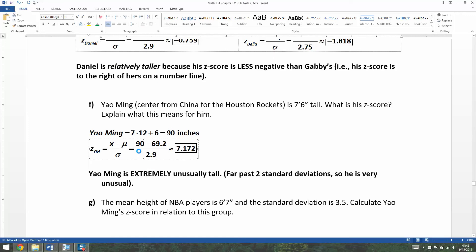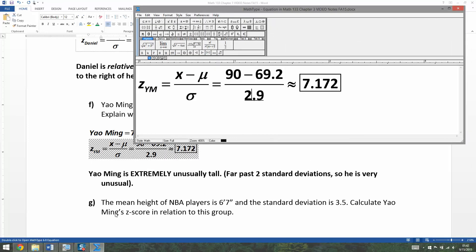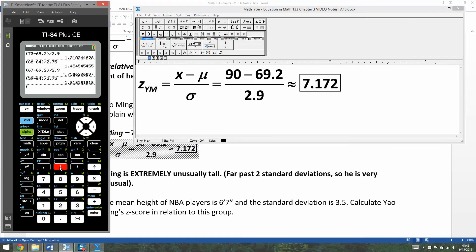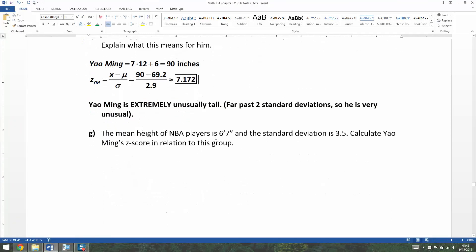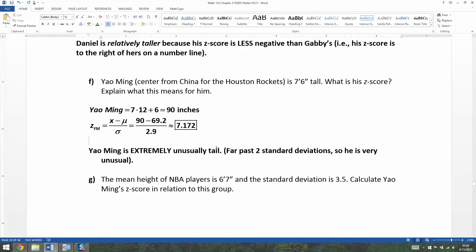So I have 90 take away 69.2 over 2.9. It's the same calculation we've done before. And you get 7.172. He is over seven standard deviations past the mean. He's extremely tall. He's far past two standard deviations, so he's very unusually tall.